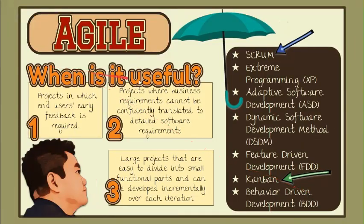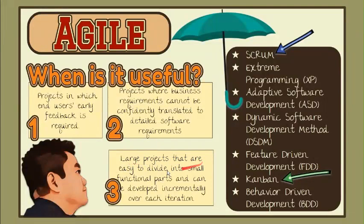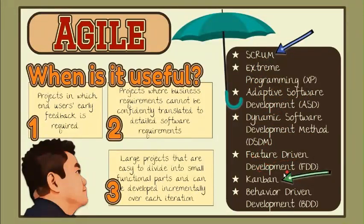When is Agile useful? Any startup initiatives where end users' early feedback is required. Most mid-sized projects in custom software development where business requirements cannot be confidently translated to detailed software requirements. Large projects that are easy to divide into small functional parts and can be developed incrementally over each iteration. Agile is an umbrella term for several methods and practices, including Scrum, Extreme Programming, Adaptive Software Development, Dynamic Software Development Method, Feature-Driven Development, Kanban, and Behavior-Driven Development. In this video, we will talk about Scrum and Kanban.